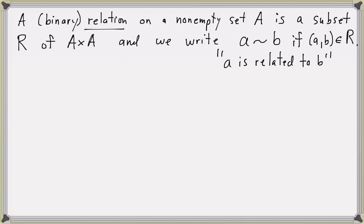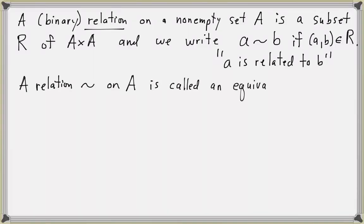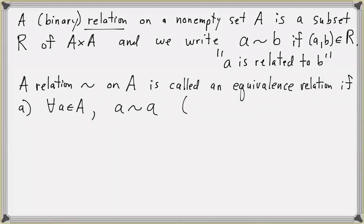Let's talk about special types of relations. A relation is called an equivalence relation if it's reflexive, symmetric, and transitive. A relation tilde on set A is called an equivalence relation if it satisfies these three conditions.